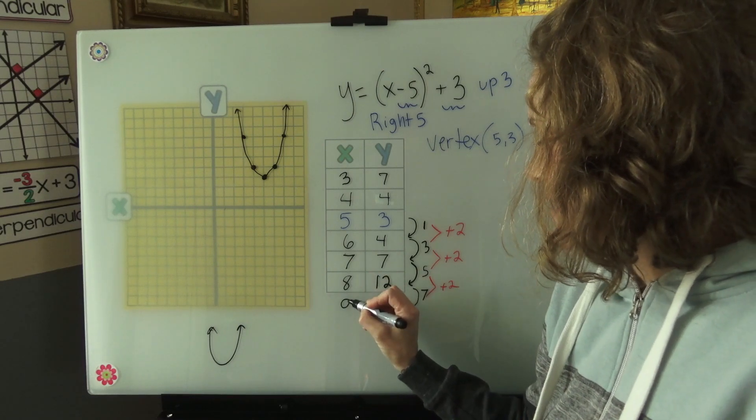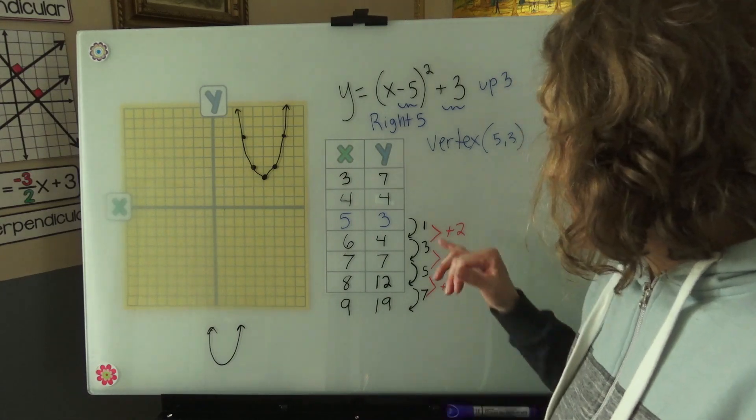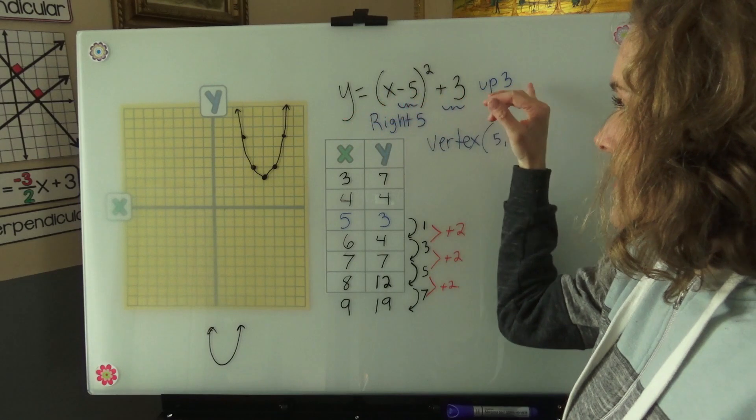So at 9, 19, we'd have another point. Now what's cool about that is that we can actually use this pattern to graph right from the beginning.